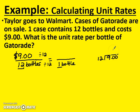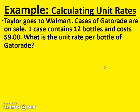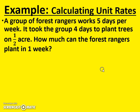Twelve goes into ninety seven times. Seven times twelve is eighty-four. There's six left over. Bring down our zero. Twelve goes into sixty five times, which is sixty. So there's nothing left over. Bring that decimal straight up. So that means it costs seventy-five cents for one bottle of Gatorade. The unit rate per bottle was seventy-five cents for each bottle.